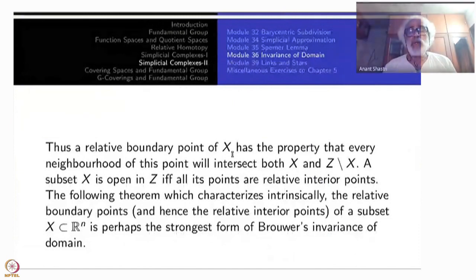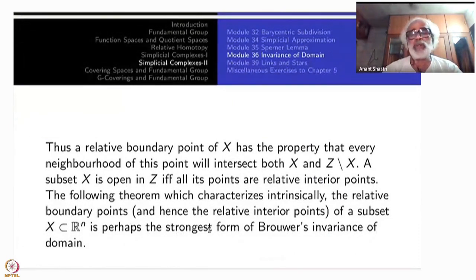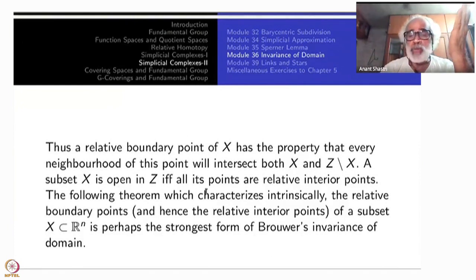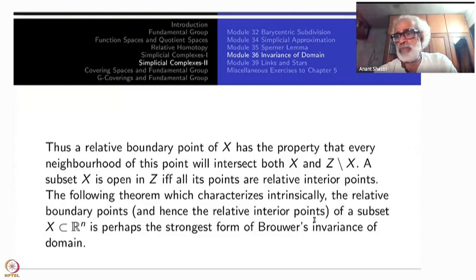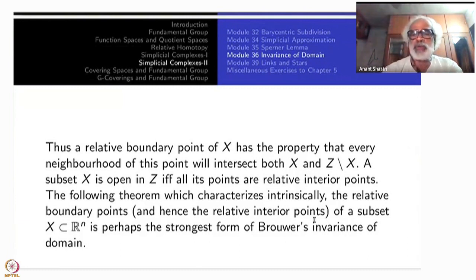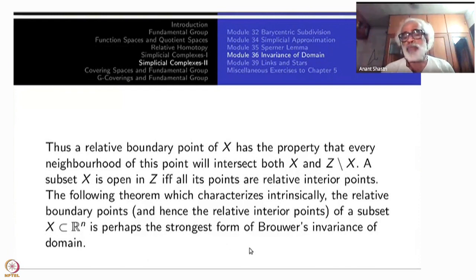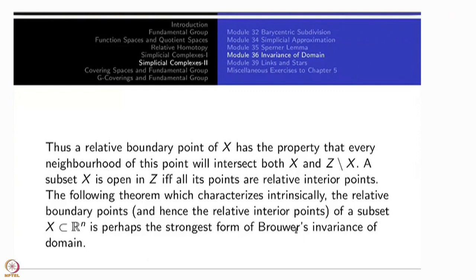The emphasis is on relative interior — we are not looking at manifold-theoretic boundary. For example, D^n has boundary S^{n-1} in the manifold sense, but that is not the boundary concept here. Relative interior and relative boundary are purely embedded notions. A subset X is open if all of its points are relative interior points. The following theorem characterizes the relative boundary points intrinsically — it is perhaps the strongest form of Brouwer's invariance of domain.